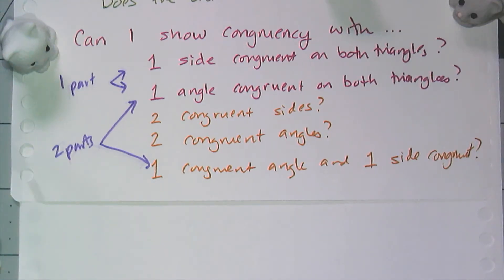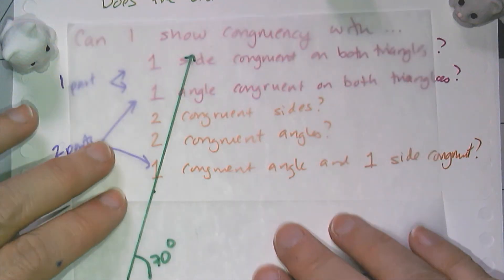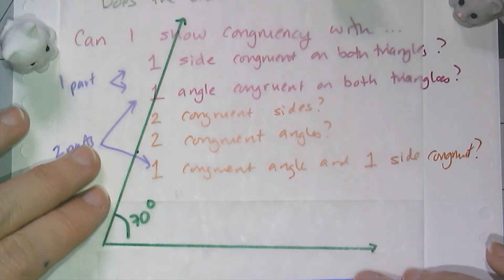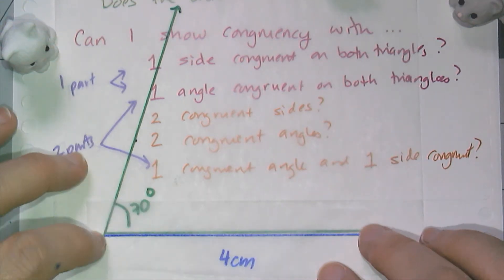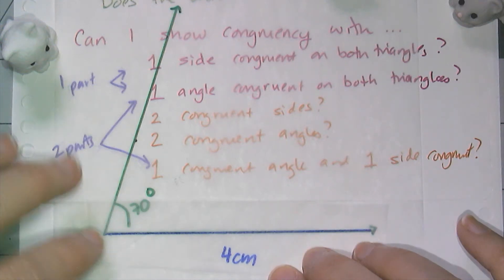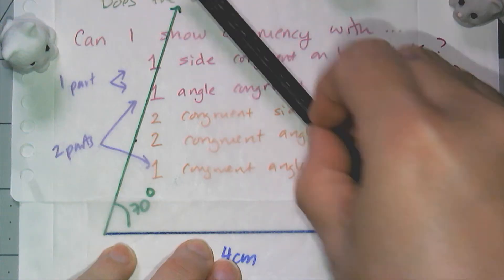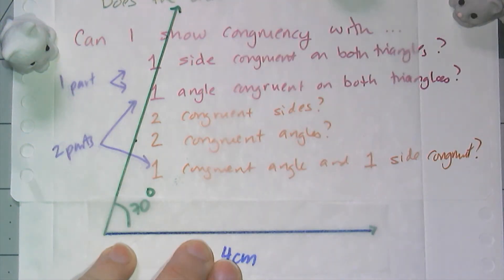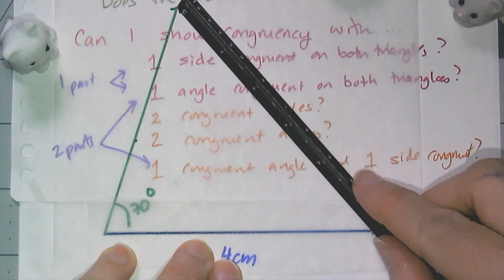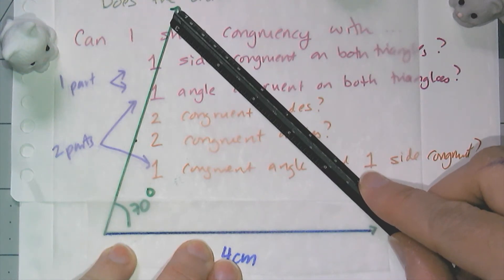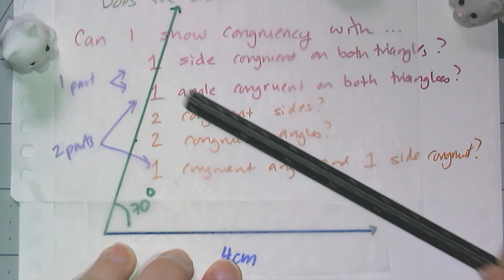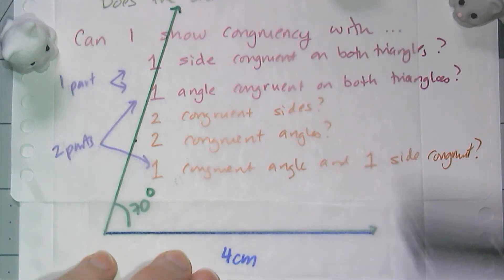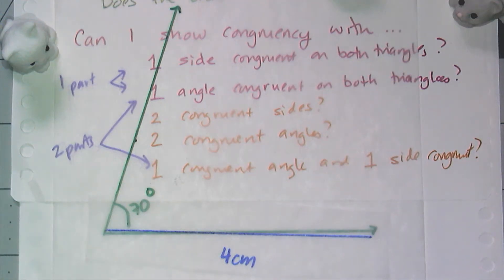What if I have two triangles with a congruent angle and a congruent side — is that enough? I think back to my constructions: someone gives me a 70-degree angle and a 4-centimeter side. This ray goes on forever, and I can have a whole bunch of different sides that match up — I just change that third side and its length changes. So I still have many different triangles that have a 70-degree angle and a 4-centimeter side. Having a side congruent and an angle congruent is not enough to show congruent triangles.